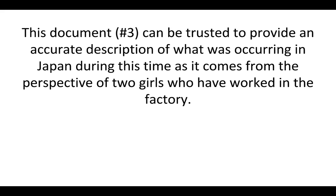Alright, last one: 'This document can be trusted to provide an accurate description of what was occurring in Japan during this time, as it comes from the perspective of two girls who have worked in the factory.' This is going to be adequate — it barely meets the requirements, but it is saying that you can trust the document and explaining why, by giving the background of the female workers in the factory. So this would be acceptable.